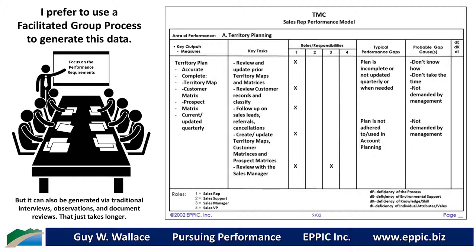We're going fairly systematically about all of this. After that's all done, I want to go back and talk to them a little bit about what kind of gap is this — what is that cause? Is that a deficiency of the process? Is that a deficiency of some environmental support? Or is this a deficiency of the individual's knowledge and skills — they simply don't know? Or is it some other individual attribute and value? And then for each probable gap cause, we attribute it to one of the various deficiency types.